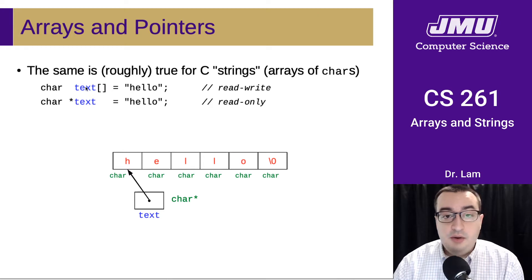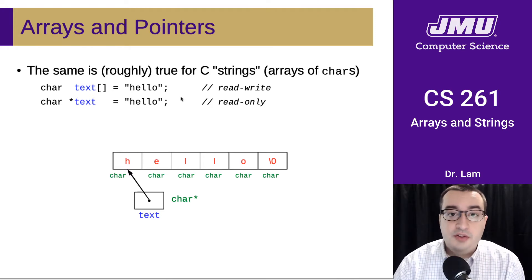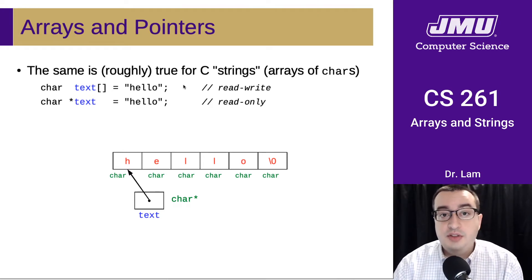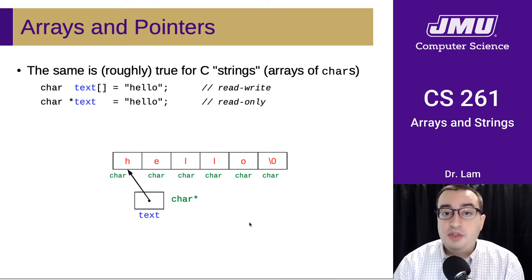Here we have some syntax that looks very similar to the declarations we had before for integer arrays. Now we can just use a string to initialize this array of characters. In both of these, we would get something that in memory looks like this, where we have an array of characters, and then we have a pointer or an alias that essentially points to that array in memory.